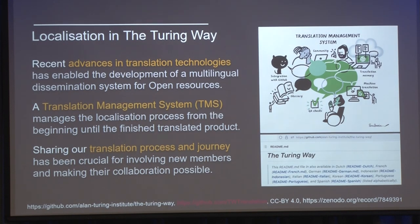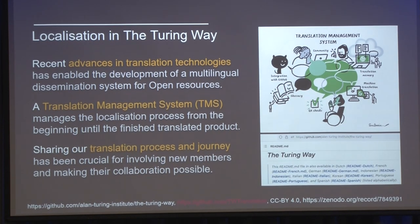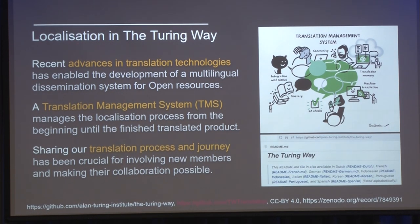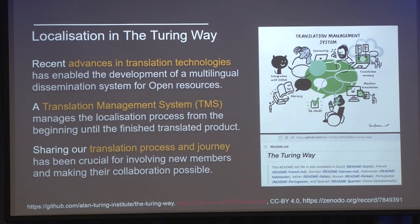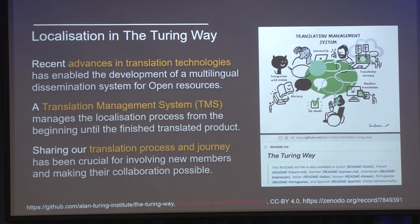Localization is not the same as translation. While translation is simply a matter of translating one word to another language without contextualizing it, with localization you can gather information from the local community and environment to make it more effective to their reality. With a digital book like the Turing Way hosted on GitHub, it would be really costly to do this manually, so we use translation management systems. We have used a platform called Transifex and currently use another called Crowdin. They manage the localization process by offering machine-assisted translations so we can just review them. We had been doing this for many years on our own in a very costly way, but with this project we can do it collectively and automated.